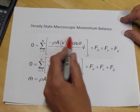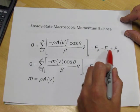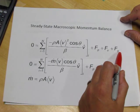So we need to write the convective term for each stream, and there's one stream in and one stream out, the pressure forces, the viscous forces on the wall, and the gravity force vector.